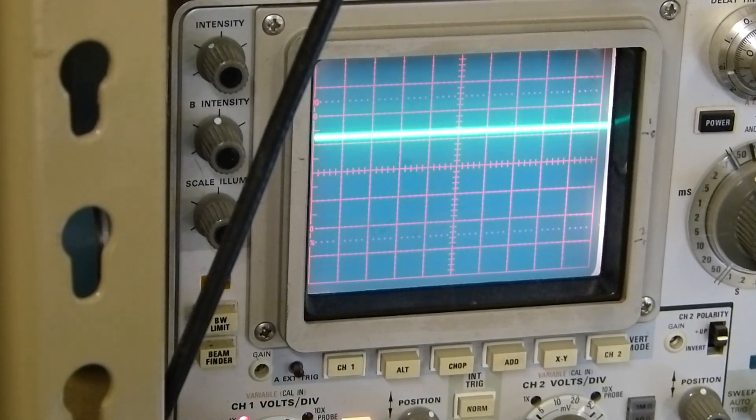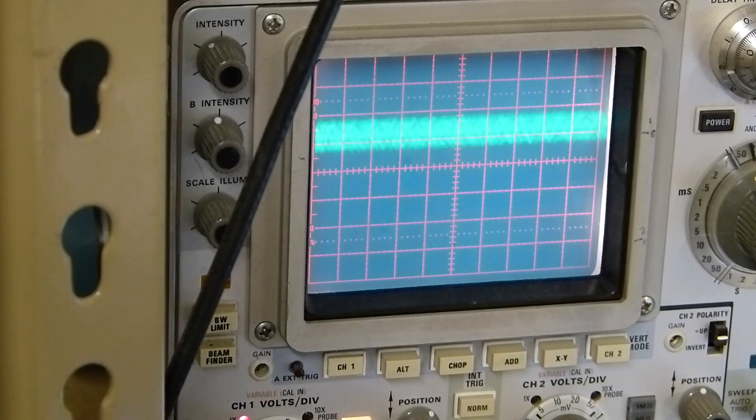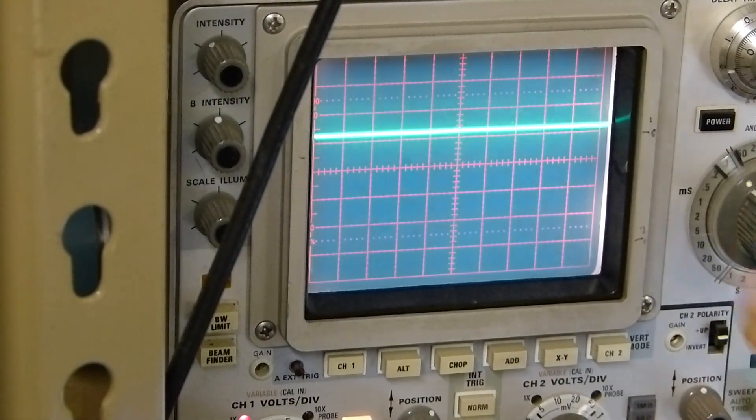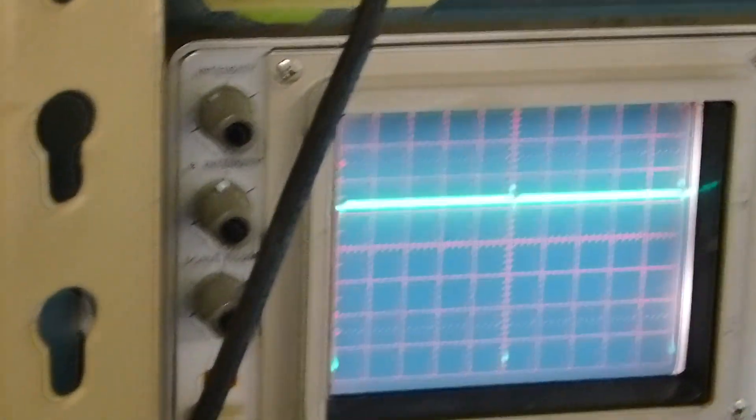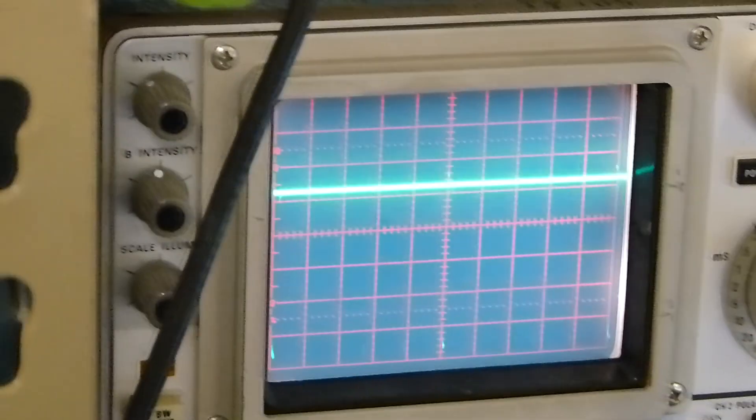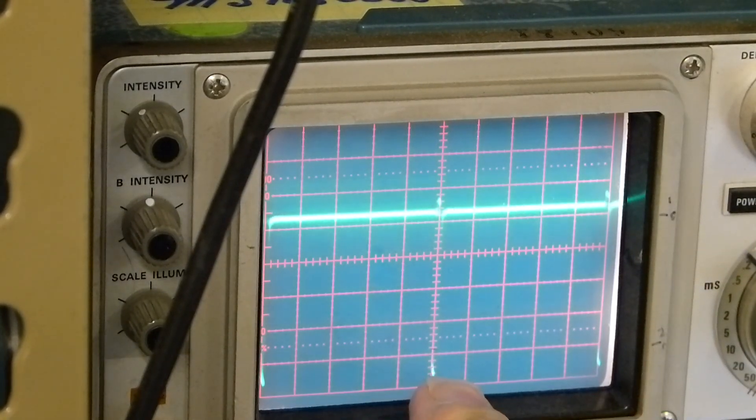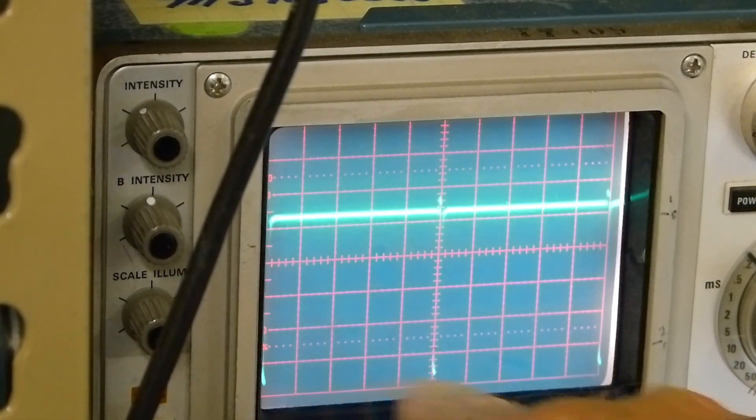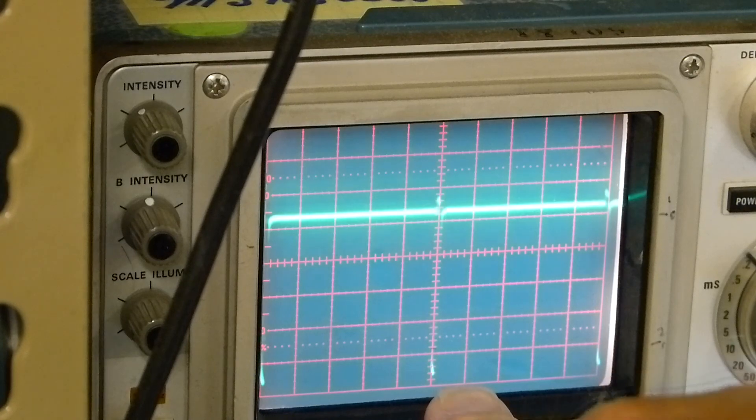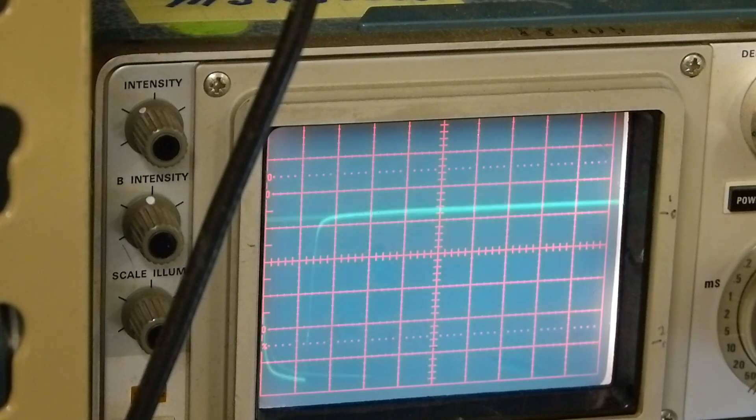There it is right there. I believe you should be able to... there it is, it's pulsing right there. This is 0.1 milliseconds per division, so it's pulsing at every 0.5 milliseconds. So this is one millisecond across, but from here to here would be one cycle, so it's pulsing it at the rate of two kilohertz.